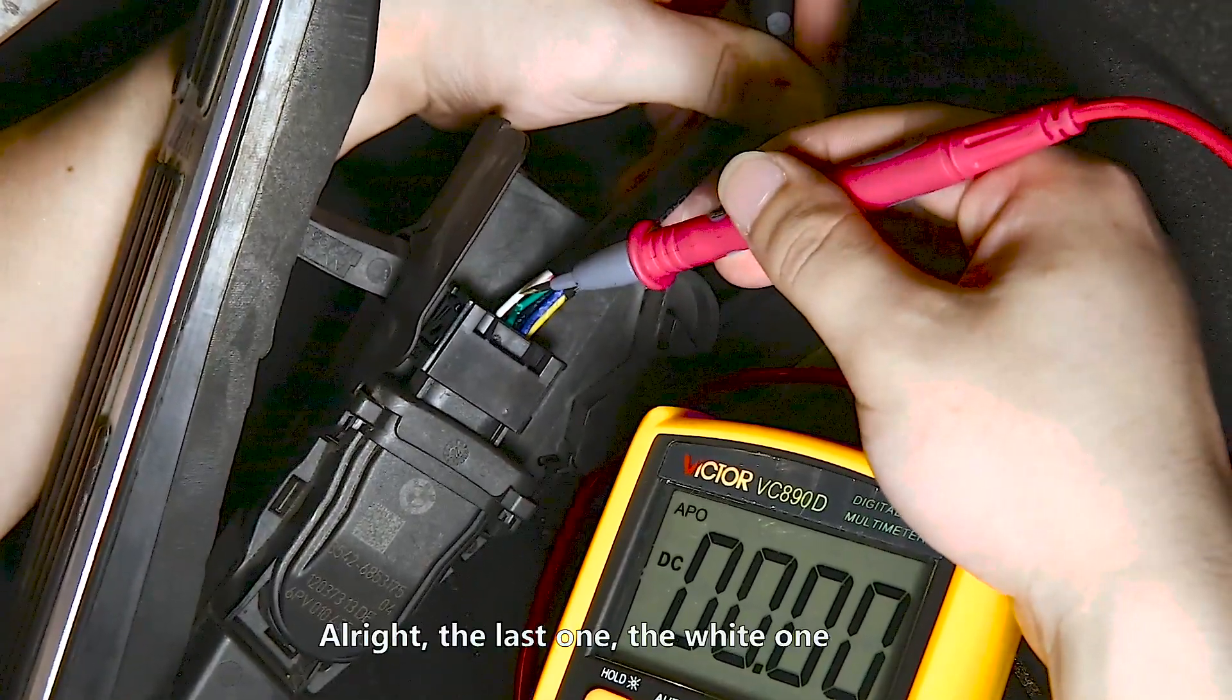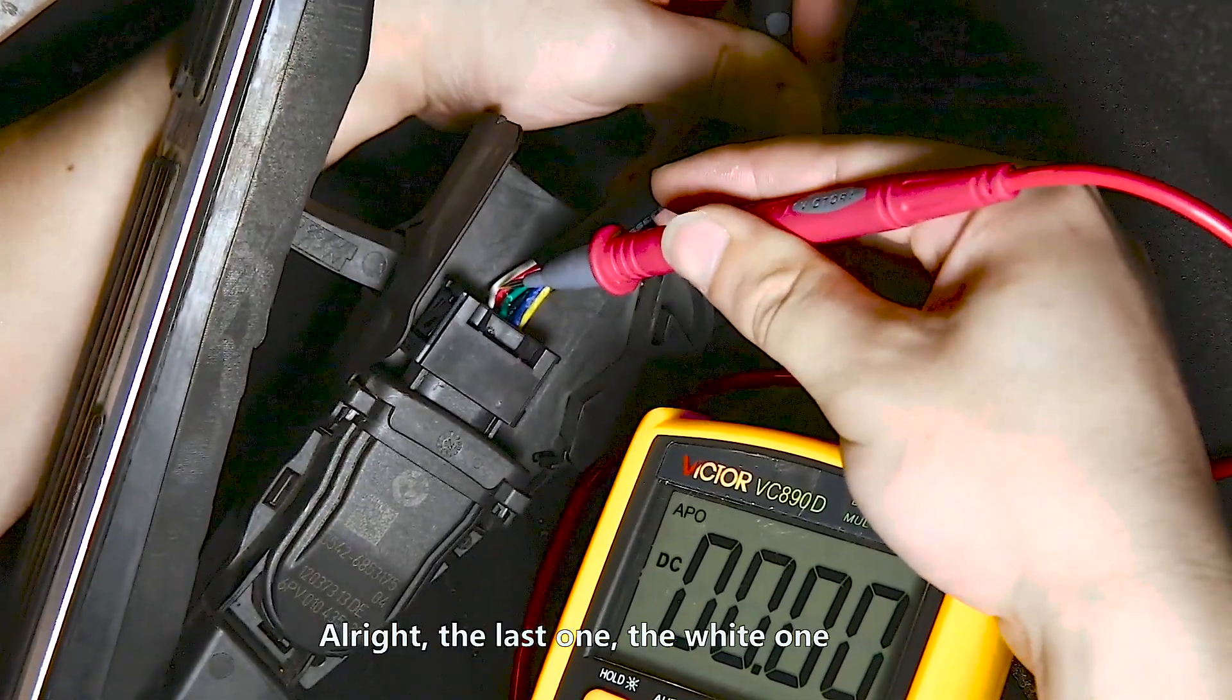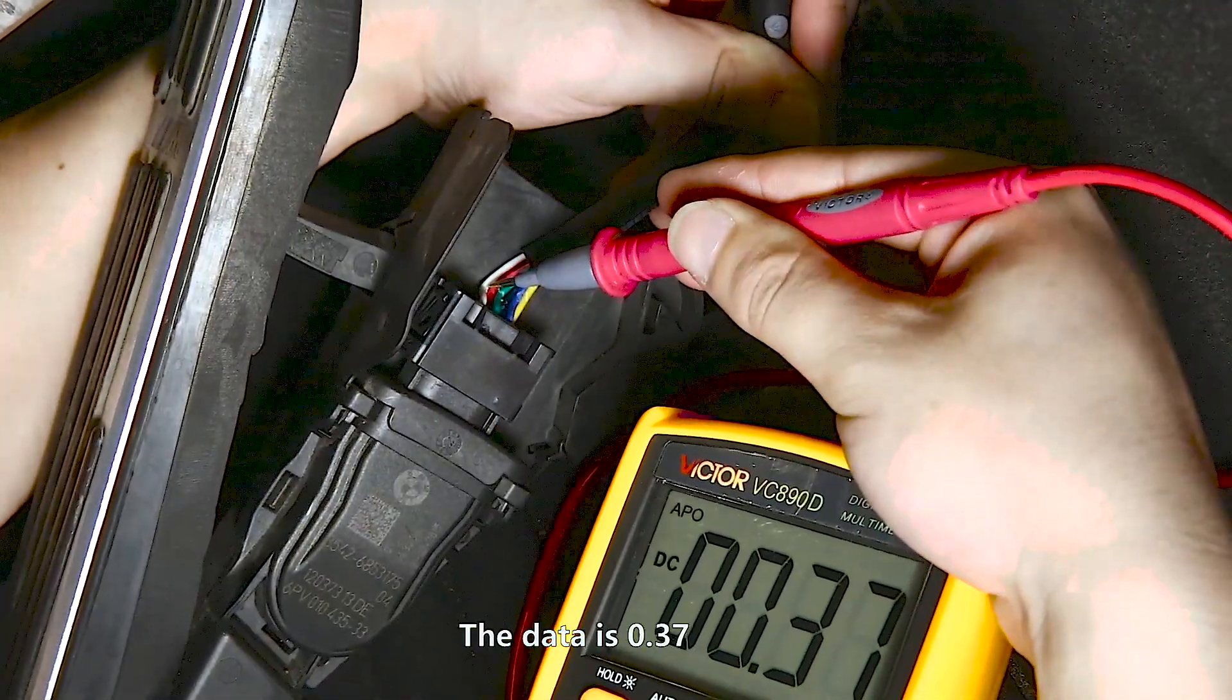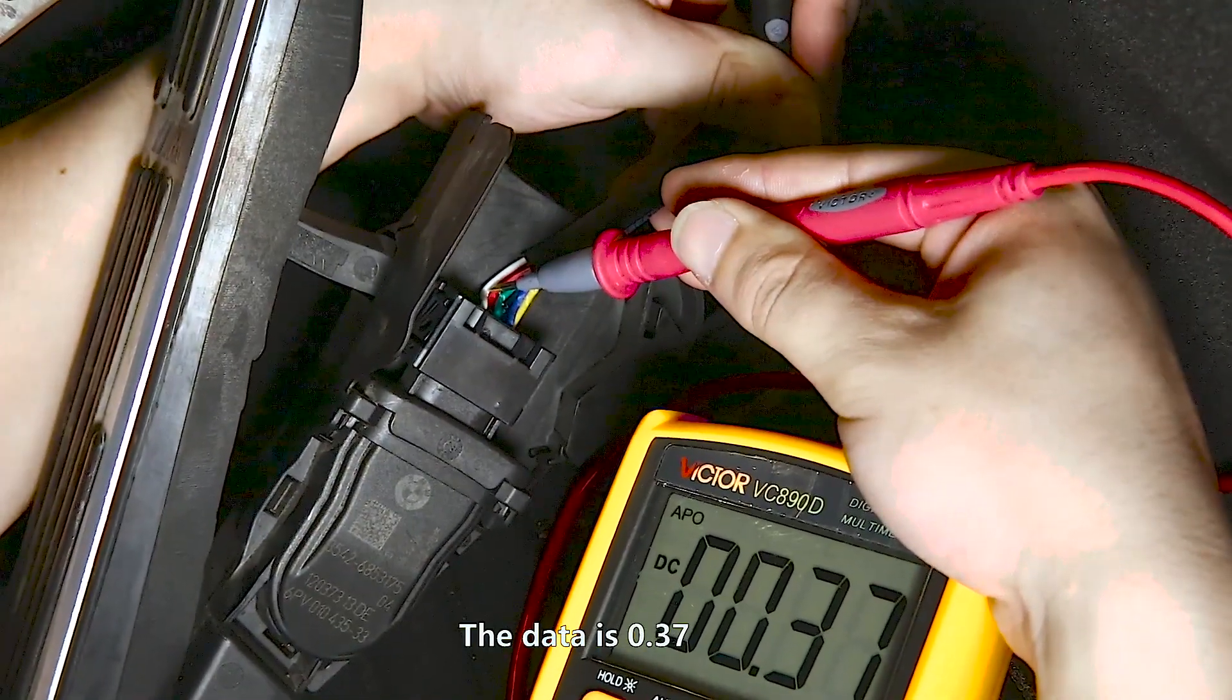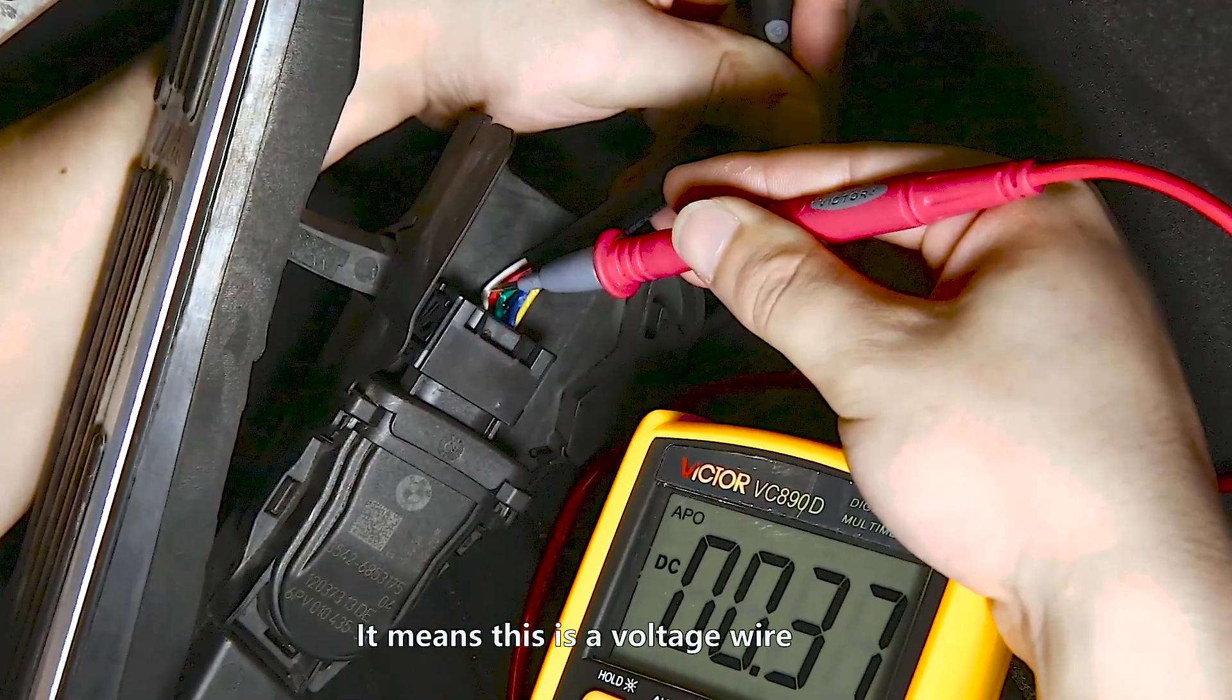The last one, the white one. The data is 0.37. It means this is a voltage wire.